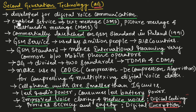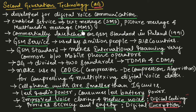With the development of 2G, it enabled services like text messages, which is SMS — short messaging service. It also enabled picture messages and multimedia messages, which is MMS. Here, MMS stands for multimedia messaging service.